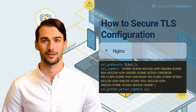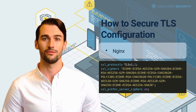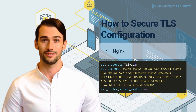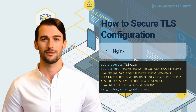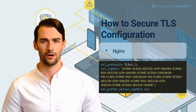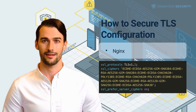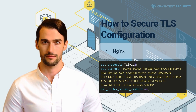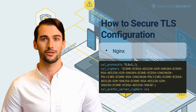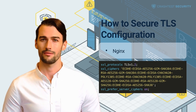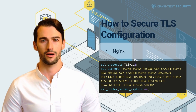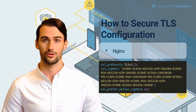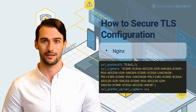For NGINX, update the configuration file, which is usually located at /etc/nginx/nginx.conf, /etc/nginx/sites-enabled/yoursite.com (Ubuntu/Debian), or /etc/nginx/conf.d/nginx.conf (RHEL/CentOS). Add the following directive to the server section, then restart the NGINX server. Note that this limits the cipher suites and protocol versions to recent TLS versions, and users with older browsers may lose access.